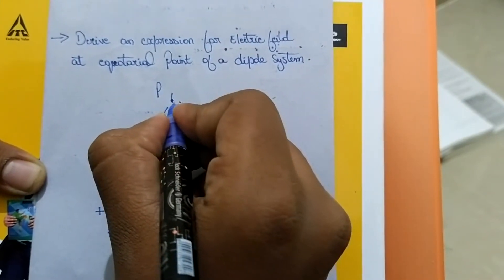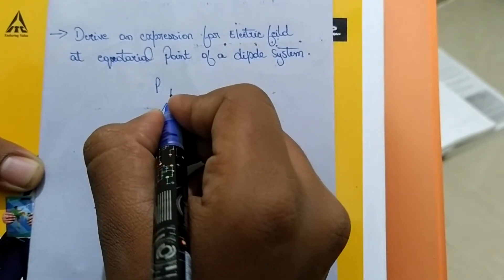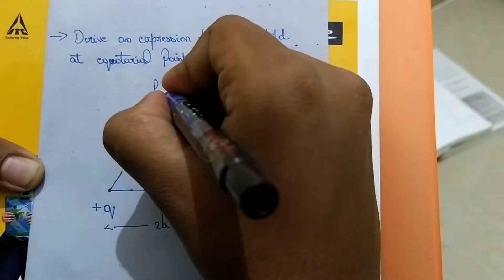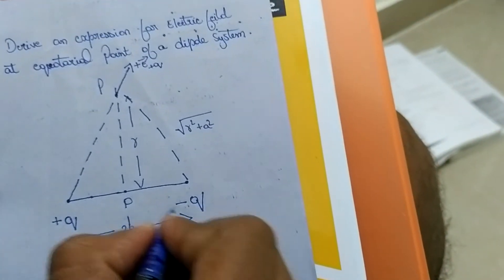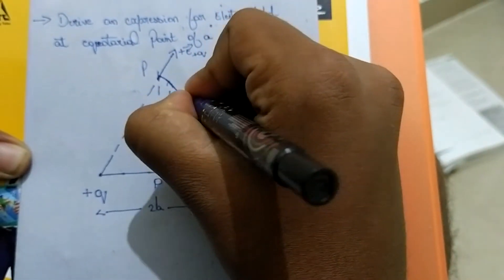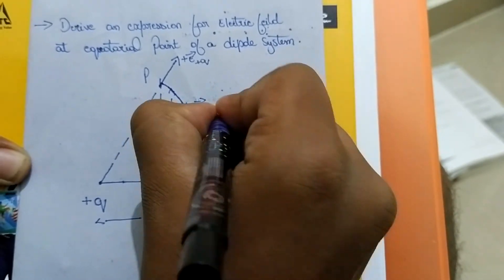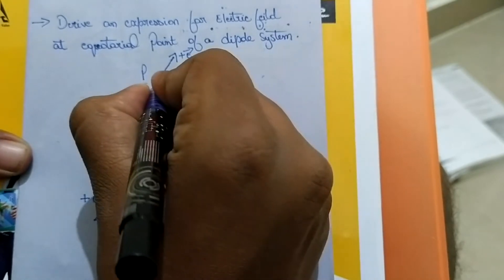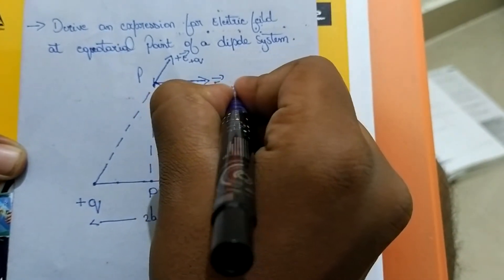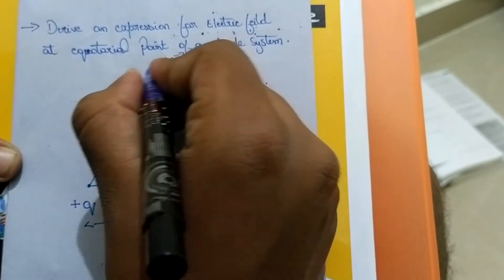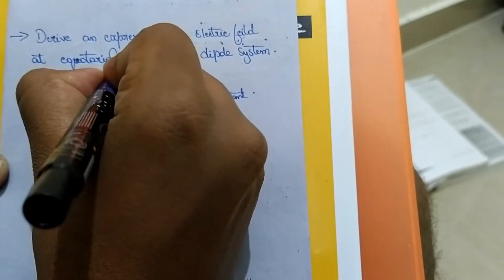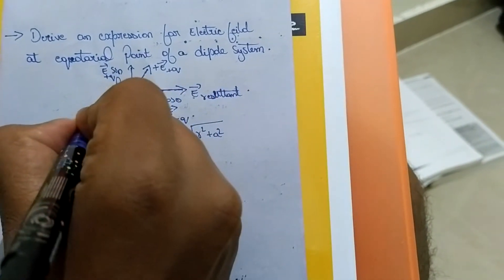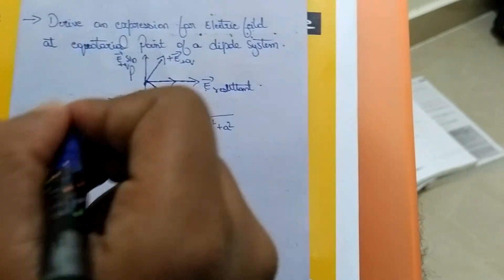At point P, we place a test charge. The electric field at point P due to the plus Q charge is repulsive in nature, E plus Q. Due to minus Q, the electric field is attractive in nature, E minus Q, giving a resultant vector. Resolving these into components, each gives a cosine component and a sine component. The sine components are equal and opposite, so they cancel each other.